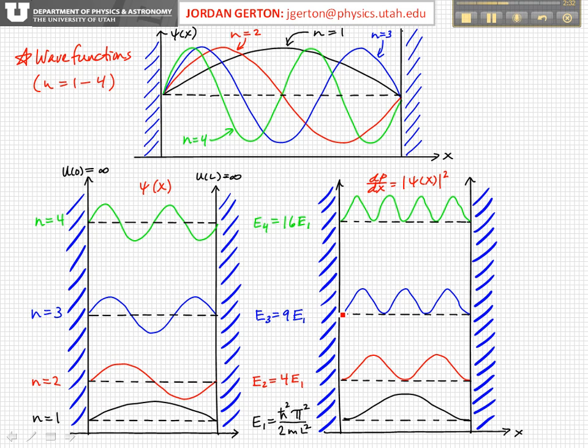Similarly, for the n equals 3 state, the third state, the second excited state, the particle can't be found at these antinodes. It's not possible to find the particle in these antinodes. If the particle has this energy, 9 times e1, so if it's in this n equals 3 state, then we would not find the particle at these antinode positions, and similar for n equals 4.